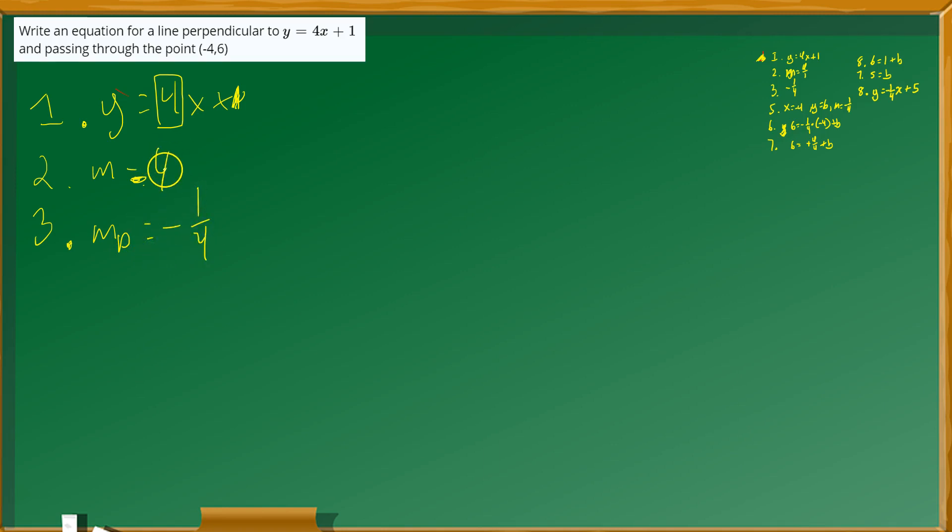So you take whatever that slope is, 4, and you flip it. If it helps you, remember that 4 is also equivalent to just writing 4 over 1, like that. So you flip it, it becomes 1 over 4, and then you attach the negative sign.